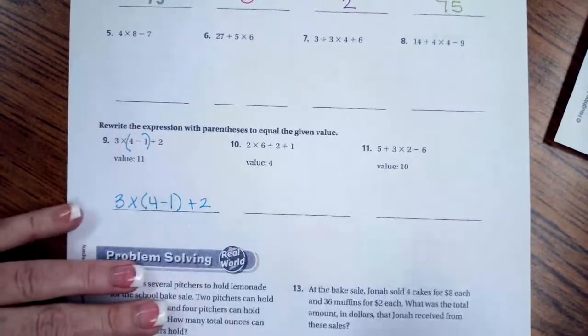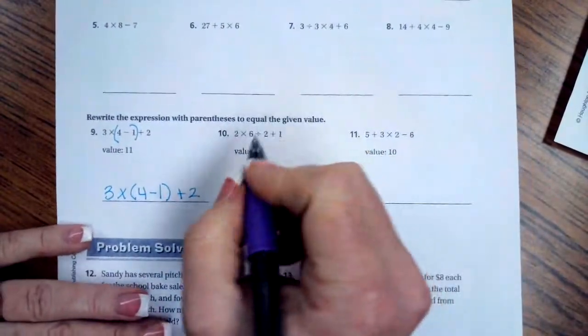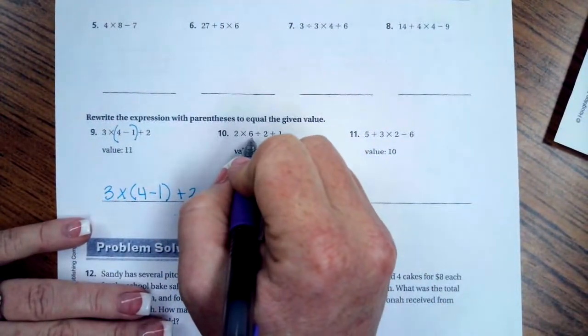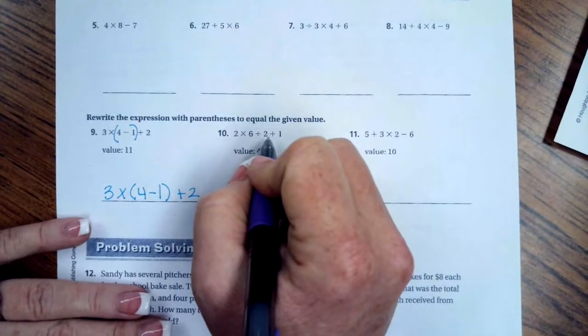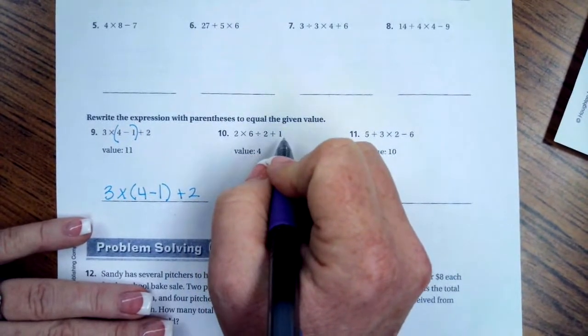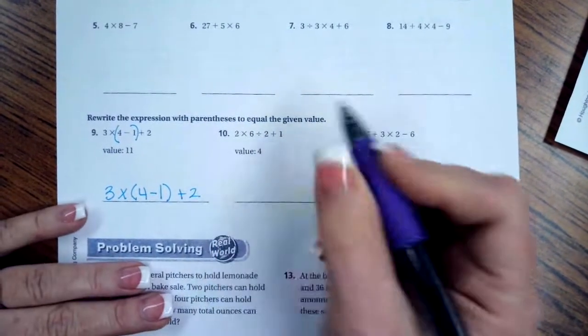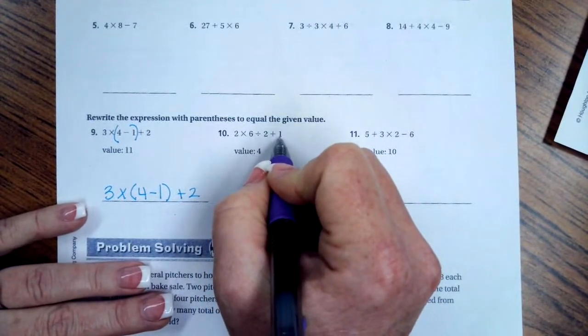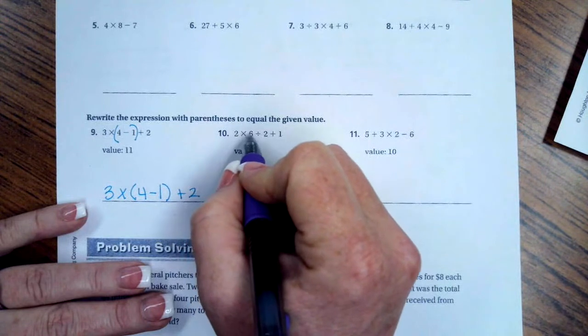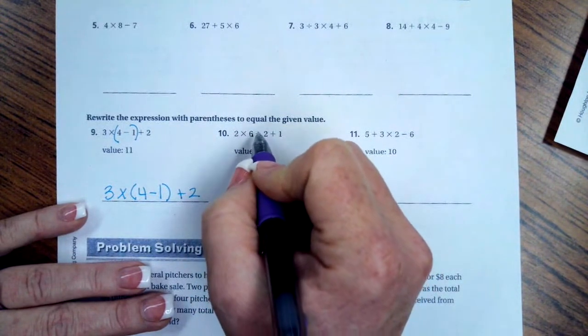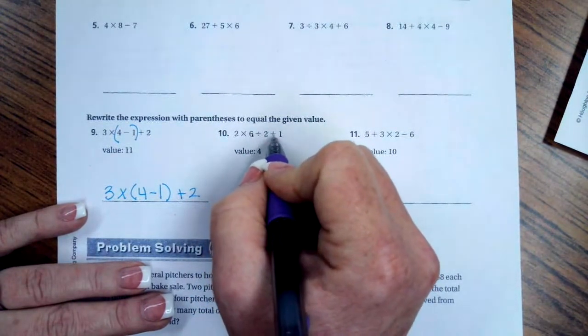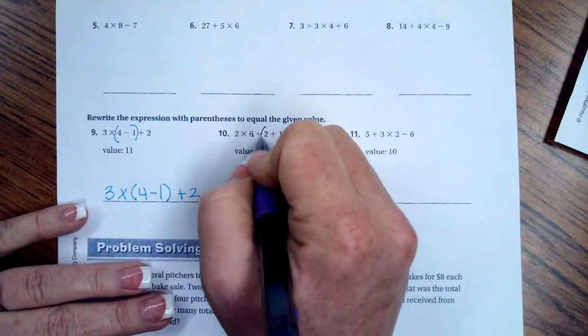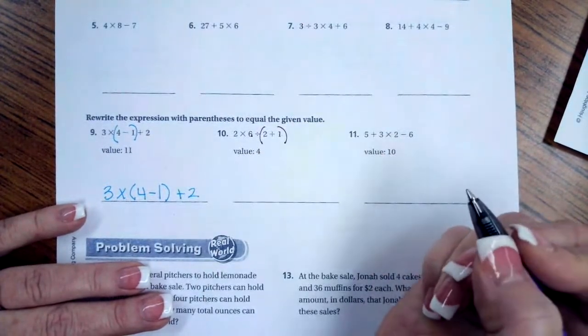I'm going to do this one more time. 2 times 6 is 12. 12 divided by 2 is 6 again, plus 1 is 7. That doesn't work for us. What if I did the parentheses around 2 plus 1? So then I have 2 times 6 is 12, divided by, that would be 3. 12 divided by 3 is 4.